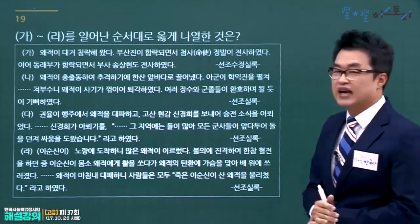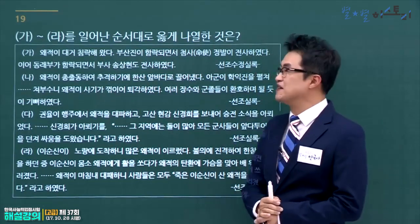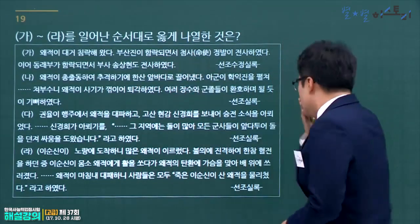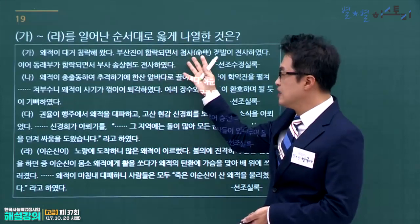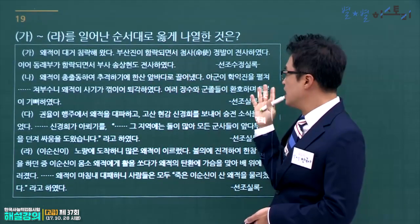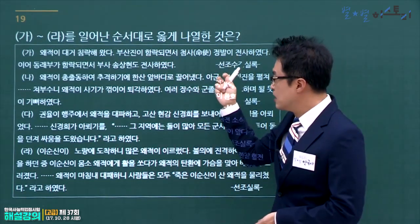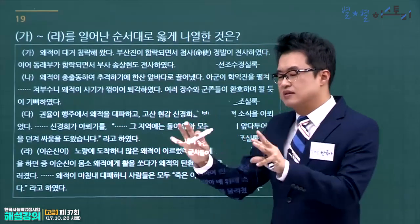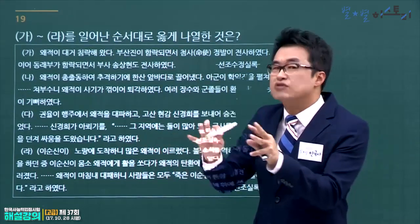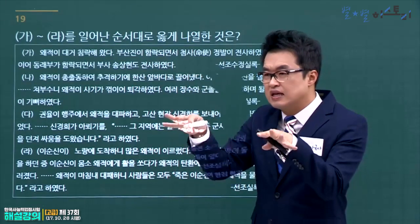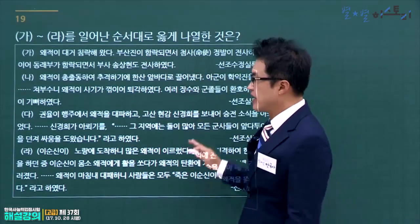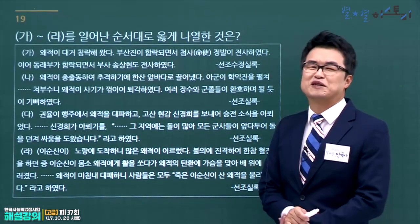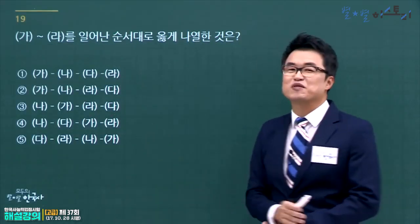임진왜란 관련 사건을 순서대로 나열하는 문제입니다. 가: 부산진·동래성 함락(임진왜란 초기), 나: 이순신의 한산대첩, 다: 권율의 행주대첩, 라: 노량해전(마지막)입니다. 일본이 침략하고, 이순신의 활약이 있었으며, 명나라 참전 후 조명연합군이 평양성을 탈환하고 행주대첩까지 이어졌고, 마지막에 노량해전이 있었습니다. 순서는 가→나→다→라이므로 정답은 1번입니다.